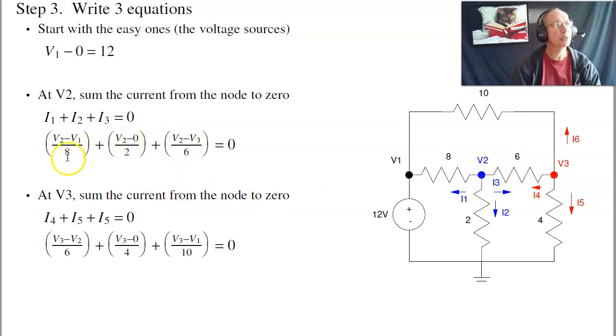And note, when I write the node equation to V2, all the V2s are positive. Everyone else is negative. What that means is if I raise the voltage on V2, I'll have more current going out. If I raise a neighboring voltage, I'll have current coming in. Since I'm summing the voltage from the node, that's the negative current going out. So a way to check your signs. The node I'm at, all the voltages are positive. All the other ones are negative.